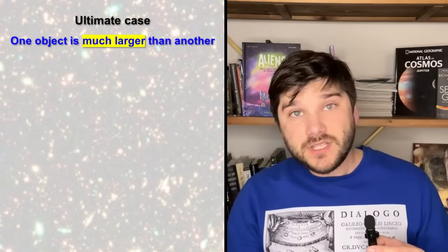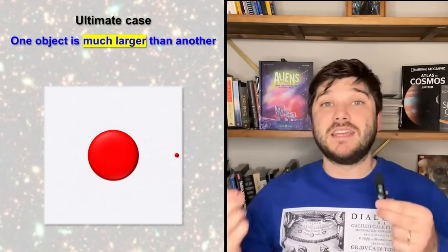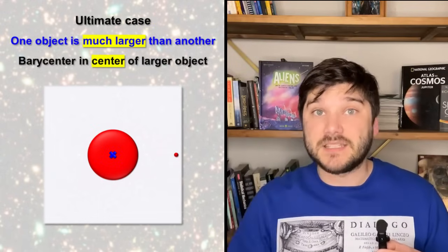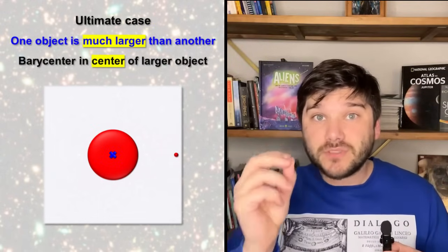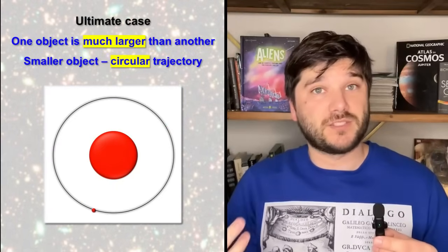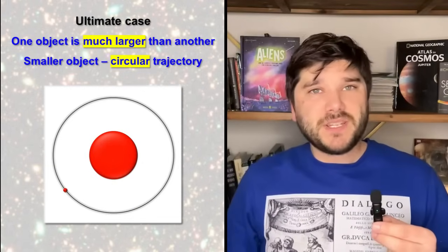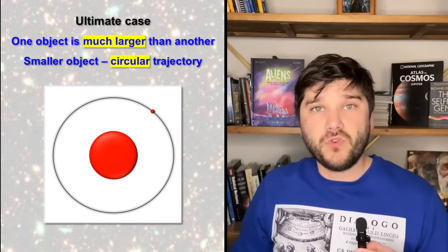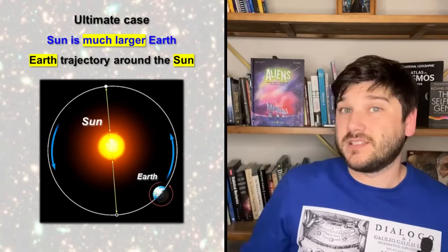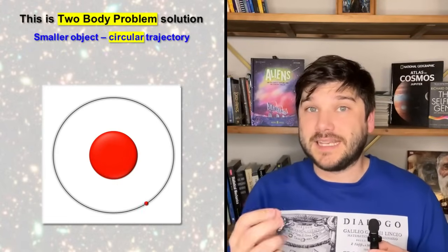Now, let's consider an ultimate case. One of the objects is really, really bigger, like in billions and billions times bigger compared to another object. In this case, the barycenter is located in the center of the bigger object. Thus, the bigger object does not move, while the smaller one is revolving around the center of the bigger object. For simplicity, the trajectory along which smaller object is moving can be viewed as a circle. This is the situation between the Earth and the Sun. Circular trajectory, the solution of the two-body problem in the ultimate case.